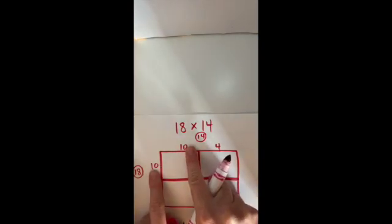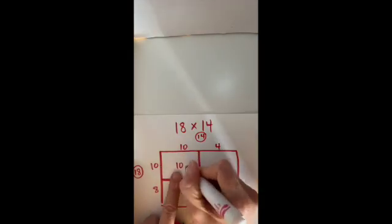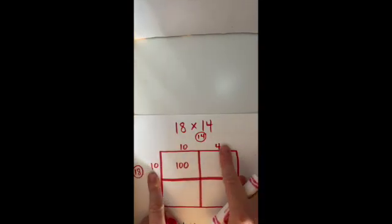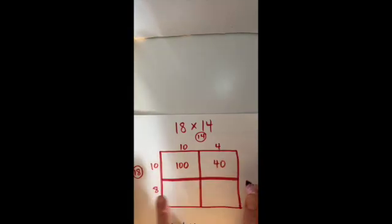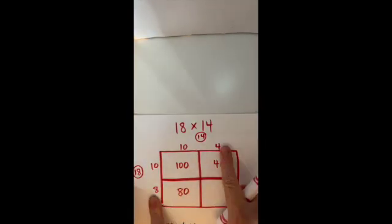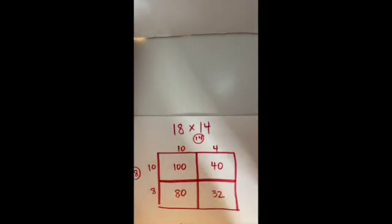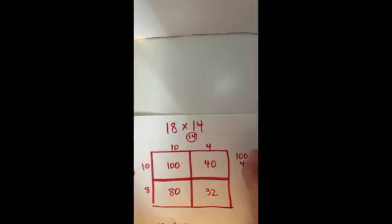Now all I have left to do is multiply out each of these parts. So I'm going to match them up and do 10 times 10 is 100, 10 times 4 is 40, 8 times 10 is 80, and 8 times 4 is 32. Now I'm going to add them all together, stacking my numbers neatly. And I start with my ones, move to my tens, and I get 252.